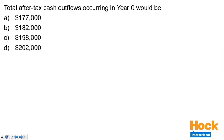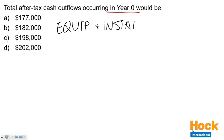The first question: total after-tax cash outflows occurring in year zero would be how much? This is the initial investment — what is the initial investment in year zero? We've got a couple of big cash outflows. We have the outflows for the equipment at $250,000 and installation and transportation at $25,000. That's a $275,000 cash outflow, which is also the amount that will need to be depreciated over the life of this project.